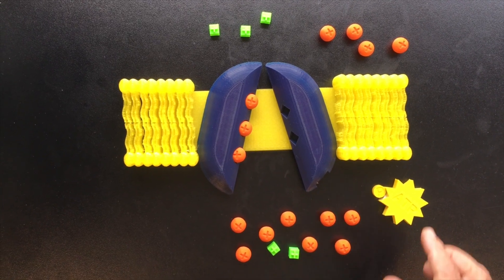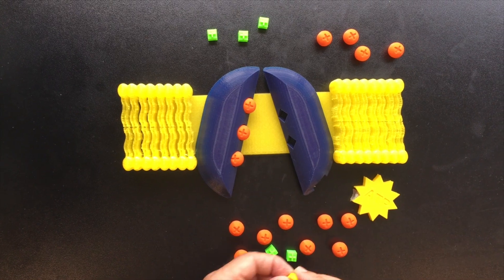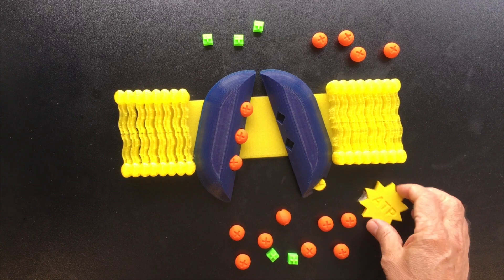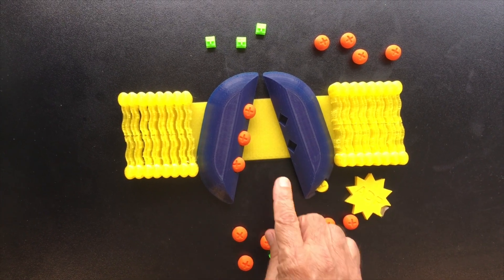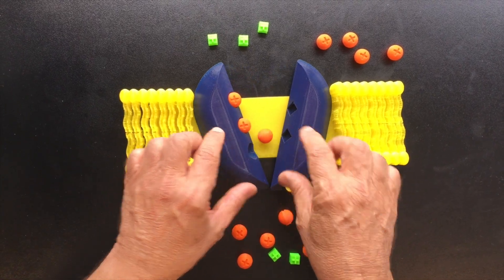When this happens, a molecule of ATP will release a phosphate group, turning into a molecule of ADP, and this will then allow the protein to change its three-dimensional shape.